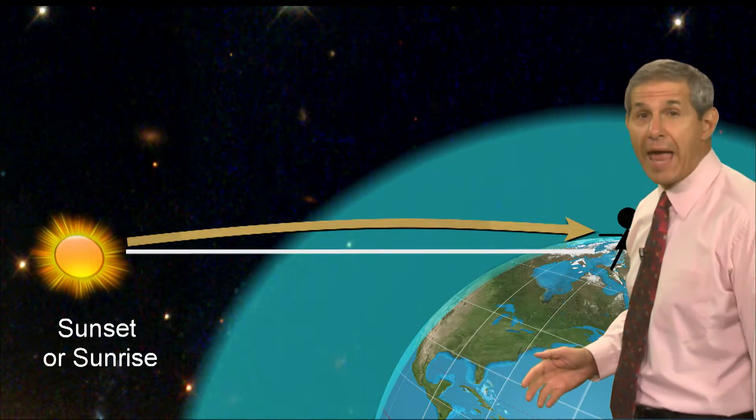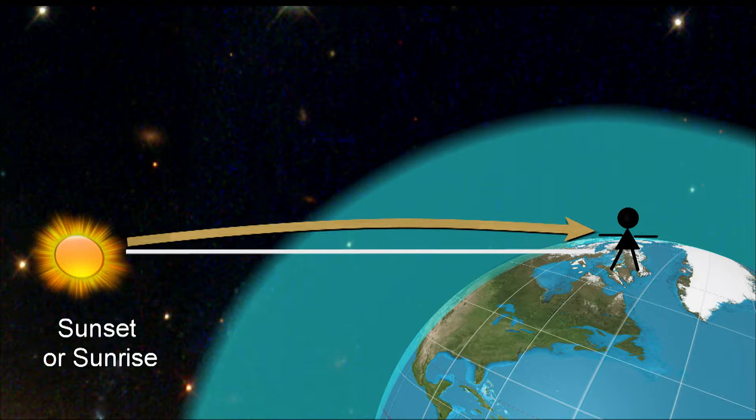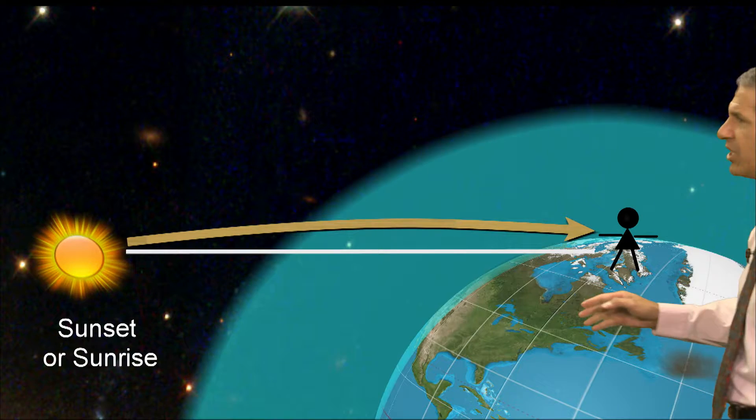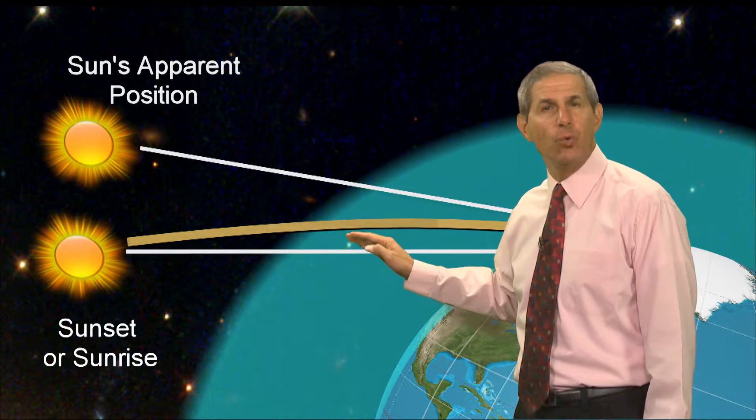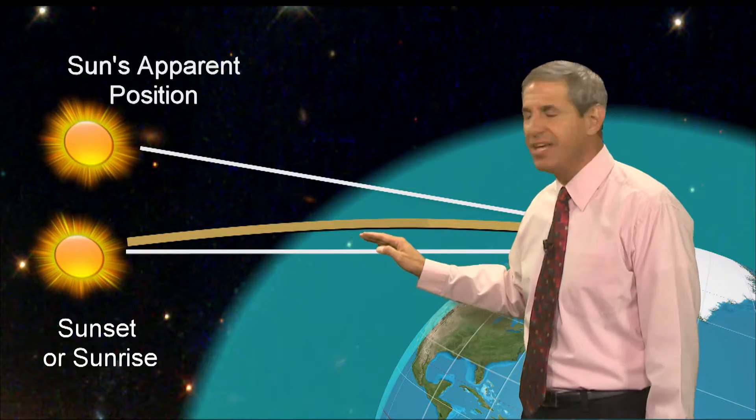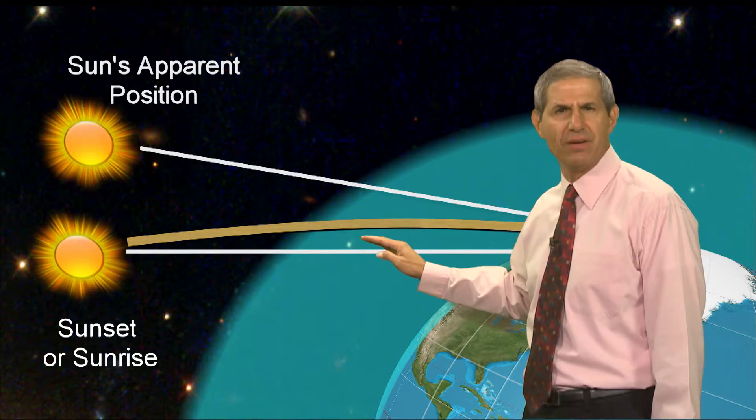There's two reasons for this. First, when sunlight passes through our atmosphere, it bends or refracts in such a way that even when the sun is just below the horizon, it appears slightly above the horizon because we see in straight lines despite the bent path of the sun.